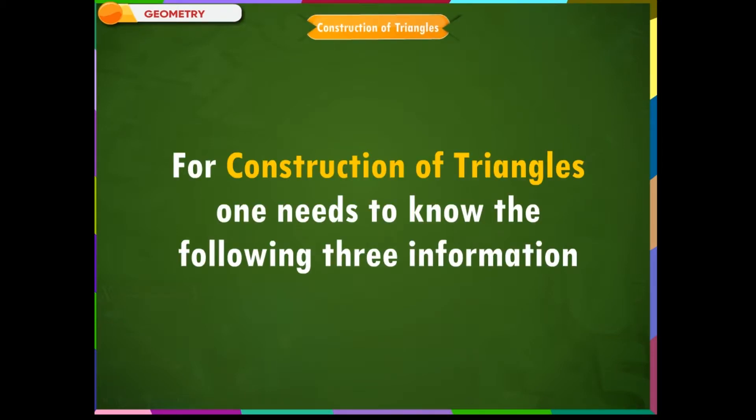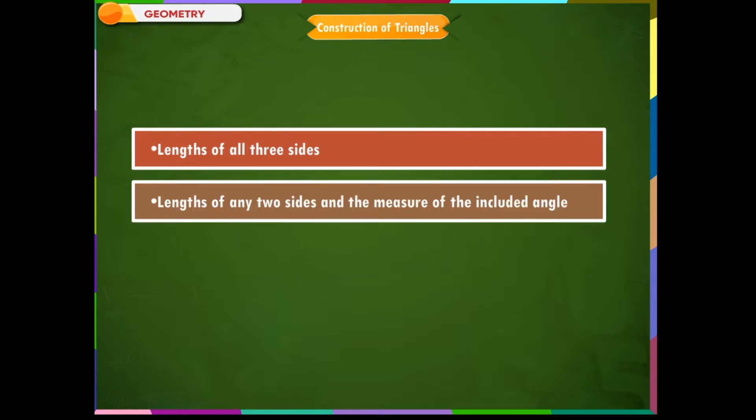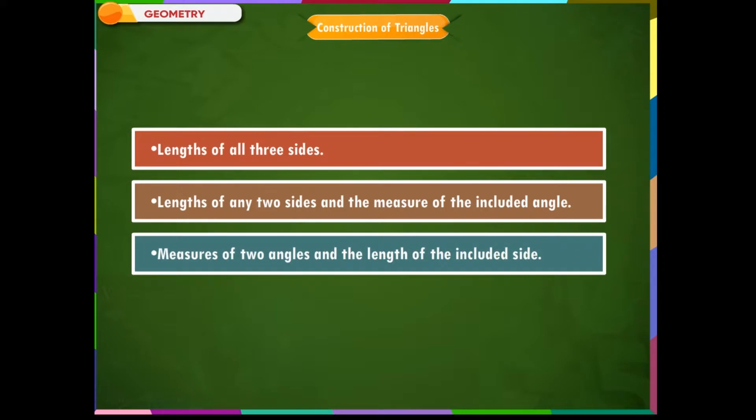Construction of triangles. For construction of triangles, one needs to know the following three information: lengths of all three sides, lengths of any two sides and the measure of the included angle, measures of two angles and the length of the included side.